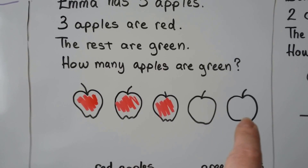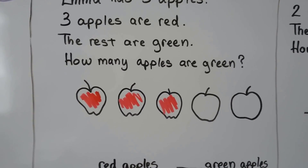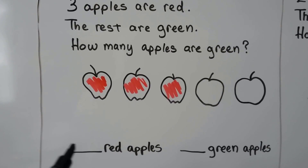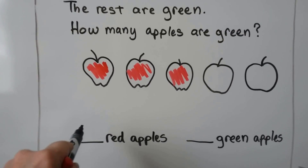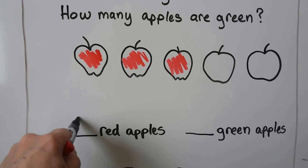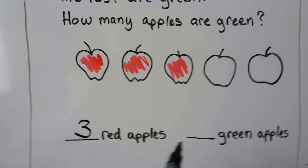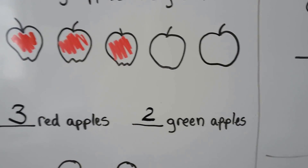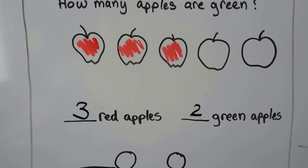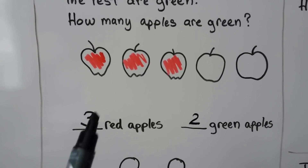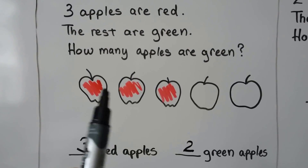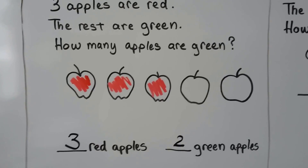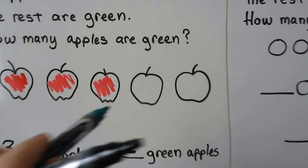How many apples are green? One, two are left, so there would be two. We have three red apples. We would have two green apples that we didn't color. And all together there would be five. So there are three red apples and two green apples.